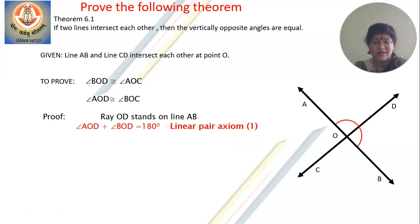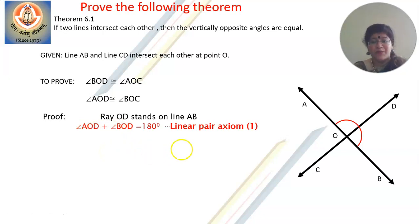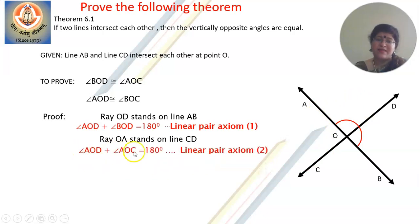Now, the clue is in the next step — you have to repeat any one of these angles. Either you take angle AOD or angle BOD. This is a clue I am giving you, because if you do not repeat any one of the angles in the next step, you will not be able to prove it. So, ray OA stands on line CD, and these two angles form a linear pair. So the next statement is: angle AOD plus angle AOC equals 180 degrees, because they are angles in a linear pair.